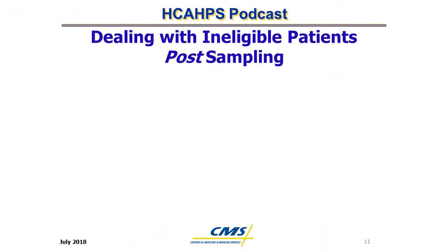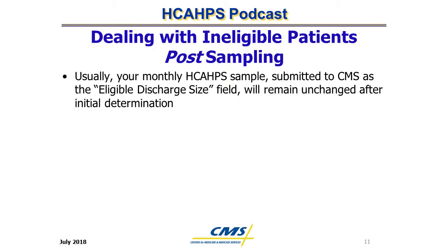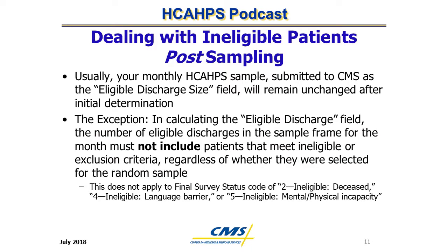Dealing with Ineligible Patients Post-Sampling. The monthly H-CAPS Sample Frame, submitted to CMS as the count in the Eligible Discharge Size field, will generally remain unchanged after initial determination. However, when patients are found to be ineligible or excluded after being drawn into the H-CAPS sample, they must be subtracted from the count of eligible discharges. Please note: this does not apply to patients who receive a final survey status code of 2 (ineligible deceased), 4 (ineligible language barrier), or 5 (ineligible mental/physical incapacity).